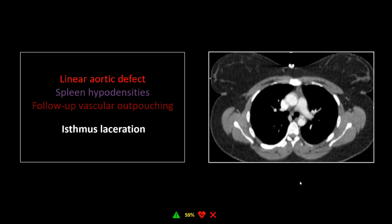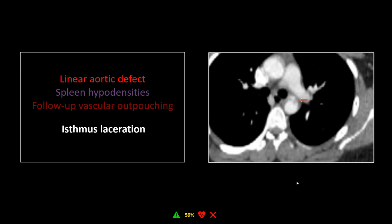One March — March 15th, the Ides of March — I had a free hour. I went into the teaching file and right at the top was a case labeled 'ductus diverticulum, splenic laceration.' I thought it sounded kind of boring, but maybe I could use it for my aorta lecture. I looked at it and had a moment, because that is not a ductus diverticulum — it is far too irregular. It is located right at the isthmus where your ligamentum arteriosum attaches, where you get 80–90% of aortic lacerations due to blunt trauma.